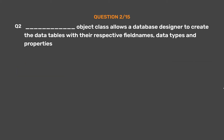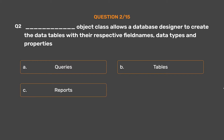Question No. 2. The blank object class allows a database designer to create data tables with their respective field names, data types and properties. Option A: Queries. Option B: Tables. Option C: Reports. Option D: Pages. The correct answer is Option B — Tables.